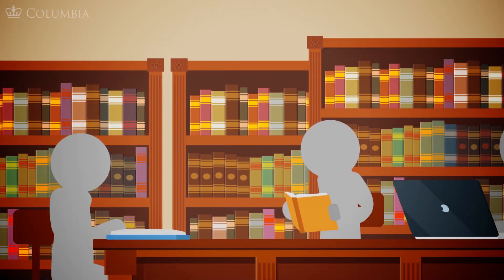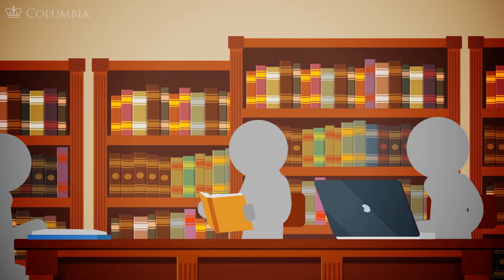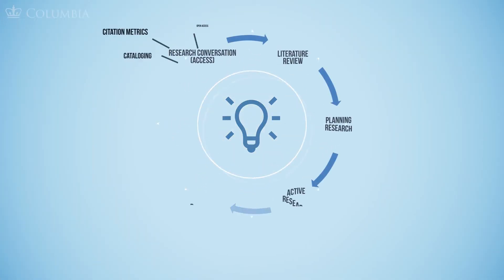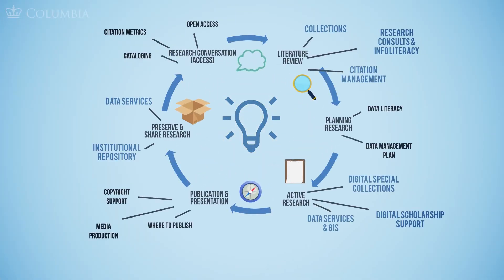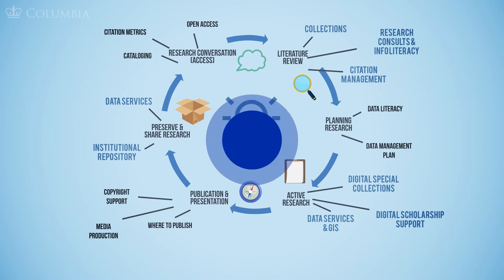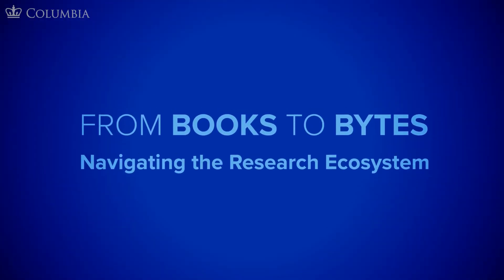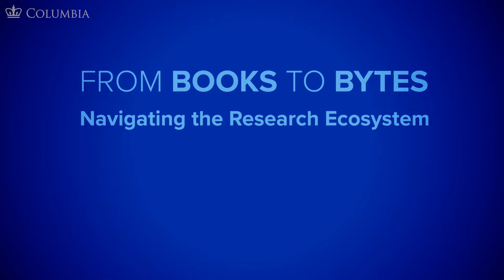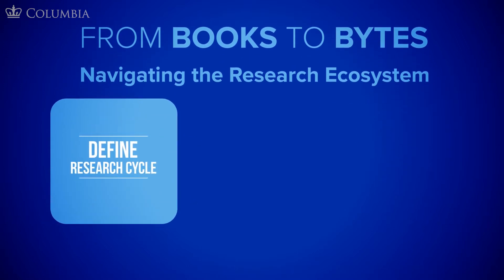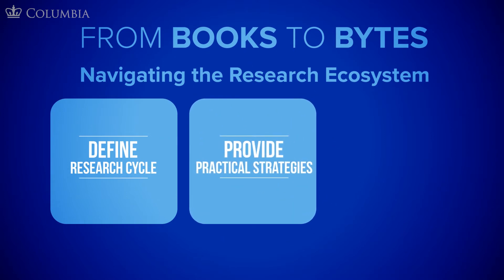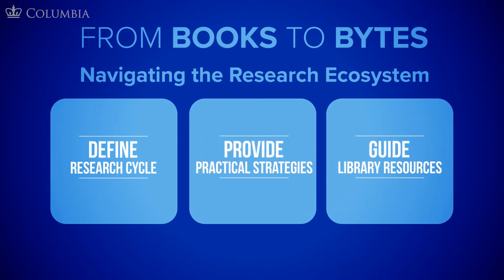Have a looming deadline for a major research project? Whether you're an undergrad writing your first paper or an established author with multiple publications, navigating the research ecosystem can be daunting. That's why the libraries at Columbia University have created From Books to Bytes: Navigating the Research Ecosystem, a set of online resources that define the research cycle, provide you with practical strategies, and guide you through the vast resources available to you at Columbia.